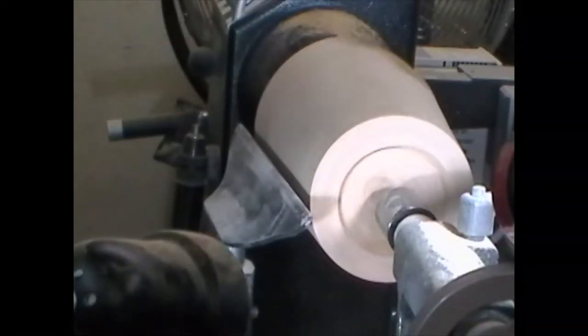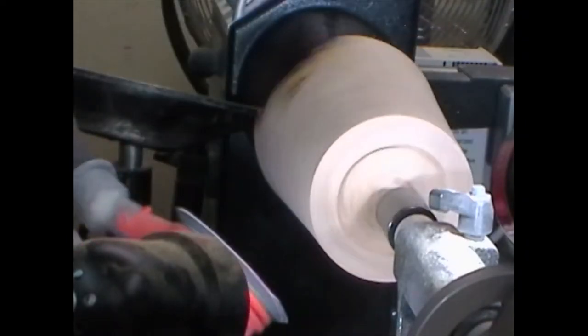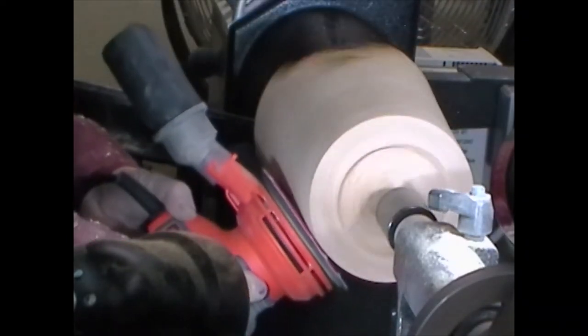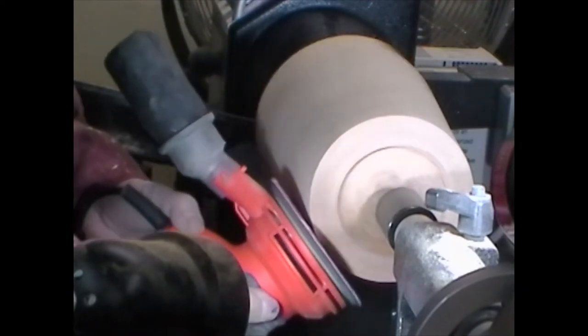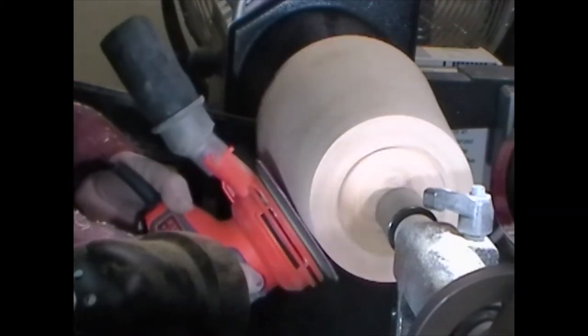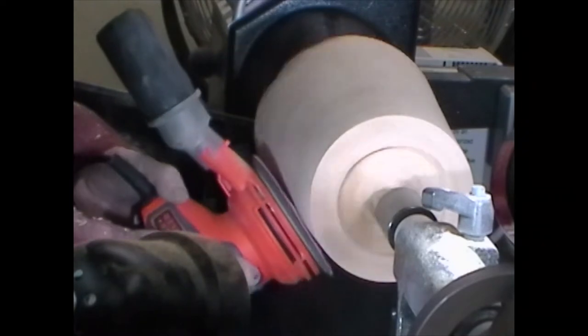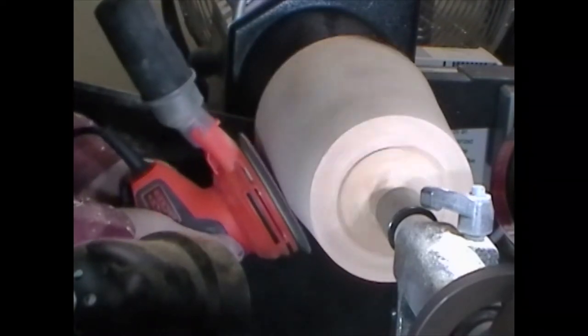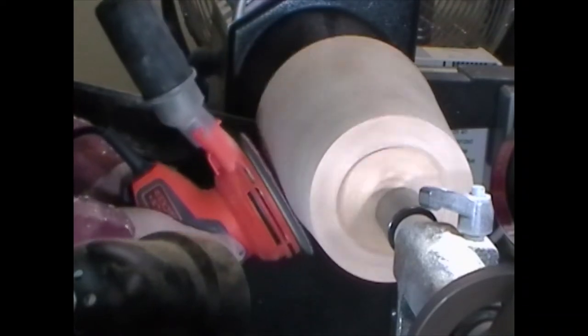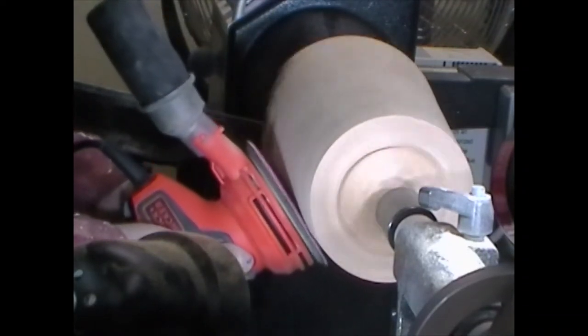Once I've completed shaping the bowl I will proceed with the sanding. Because this is a flat surface I'm able to use an orbital sander. I typically use 150 grit or 220 grit and rotate the lathe at between 50 and 150 RPM. I hold the sander below centerline so the dust is propelled away from me by the rotation of the lathe.